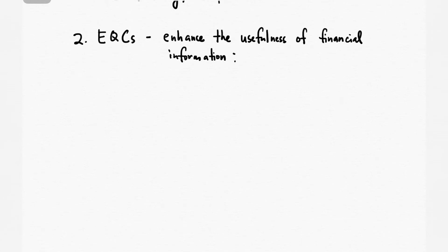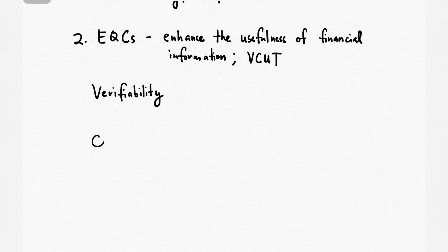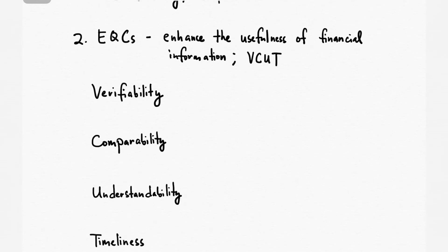For enhancing qualitative characteristics, we can use the mnemonic VCAT. For letter V, we have verifiability; letter C, comparability; letter U, understandability; and letter T, timeliness. So these four are our enhancing qualitative characteristics.